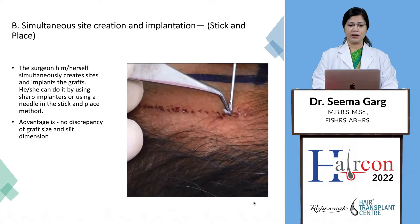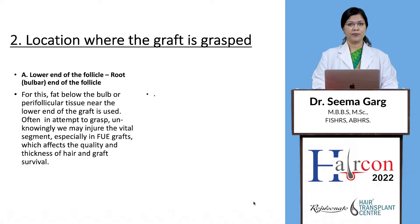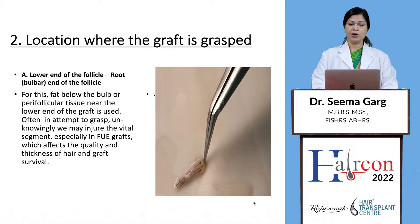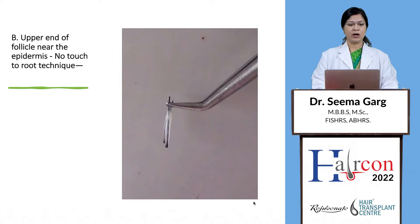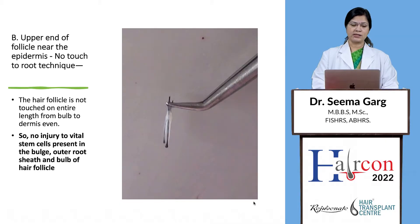If sites are created simultaneously, the surgeon creates sites while implanting the graft, using either sharp implanters or needles. The advantage is no discrepancy between graft size and slit dimension. When grafts are grasped from the lower root end, the perifollicular tissue near the lower end is used, and we may inadvertently injure the vital segment, especially in FUE grafts. If grafts are grasped from the upper end, this is the no-touch-to-root technique — the hair follicle is not touched along its entire length from bulb to dermis, so there is no injury to the vital stem cells present in the bulge, outer root sheath, or bulb.